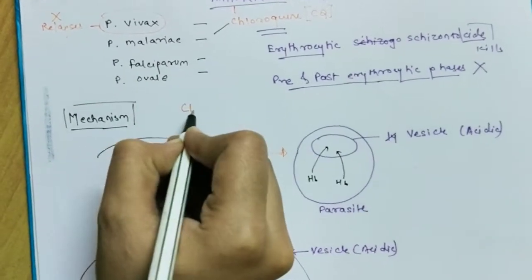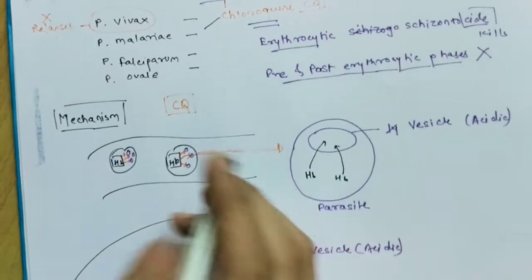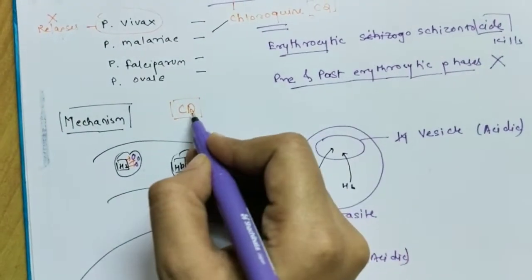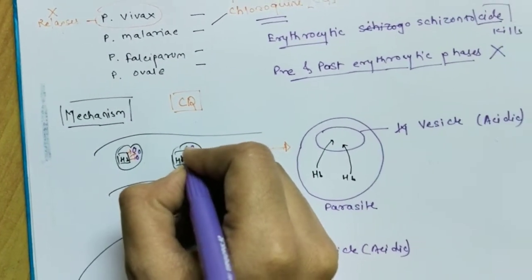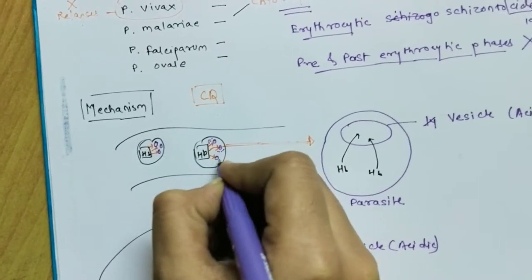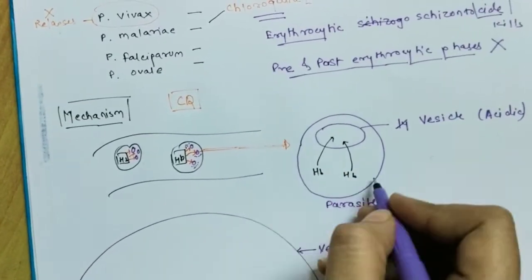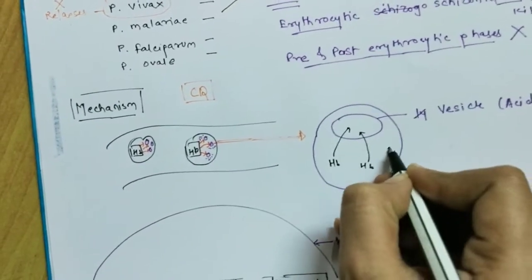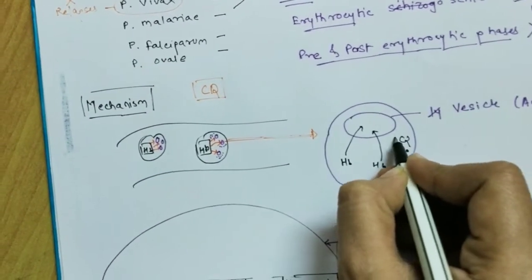Now let's see what the chloroquine does when it comes inside the body. So when it comes, it enters the bloodstream and gets accumulated by the sensitive parasite. The parasite itself accumulates the chloroquine. Now the chloroquine-resistant parasite can't accumulate the chloroquine.